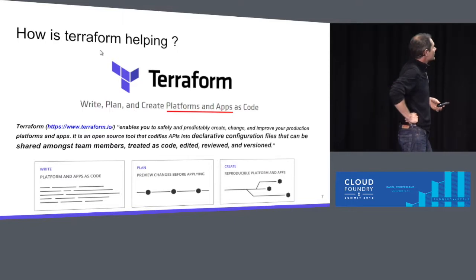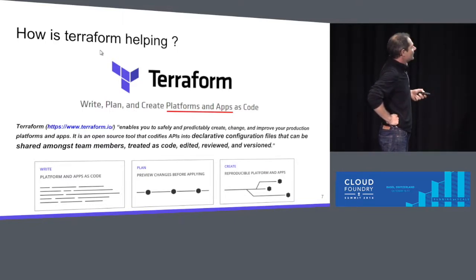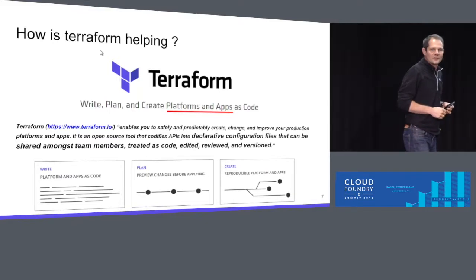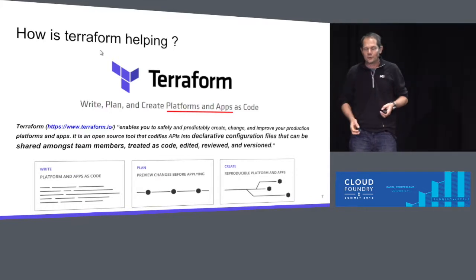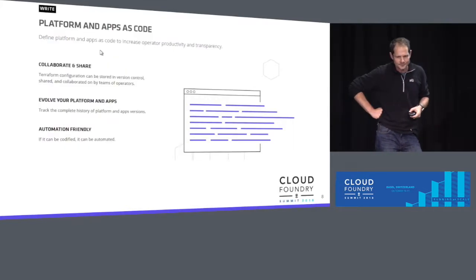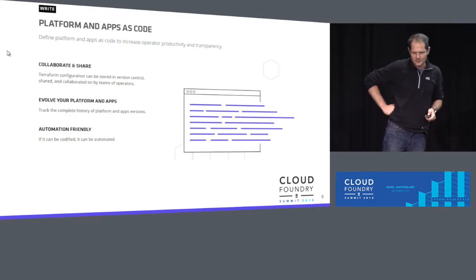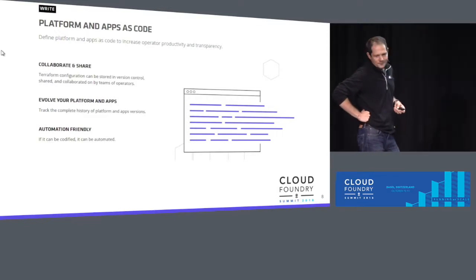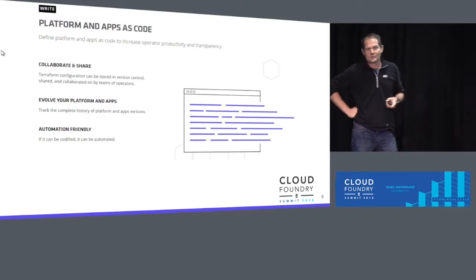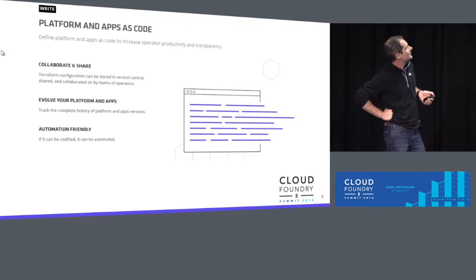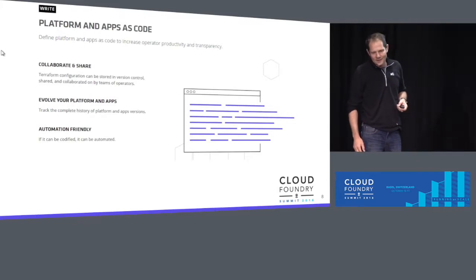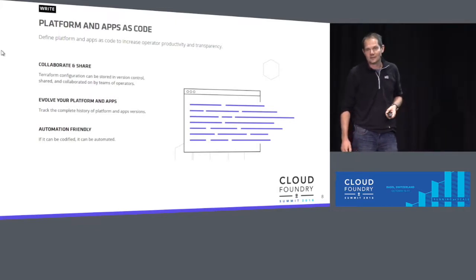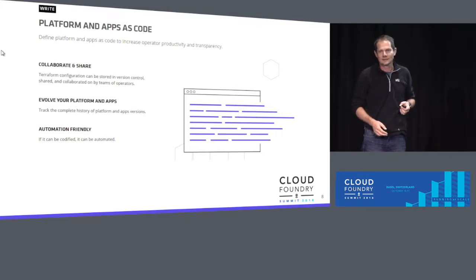There are three phases to Terraform. The first phase is we write config. Then we plan — we ask Terraform to tell us what changes it would apply. And then the last phase is create — we ask it to actually perform those changes. We write code using Terraform syntax, it's in Git so I can collaborate with my team, see history, put tags, and do version control. Since it's code, I use my usual IDE and get code completion, syntax highlighting, navigation, and refactoring — everything expected from a programming language.